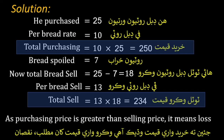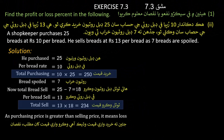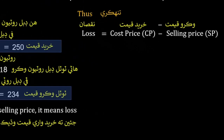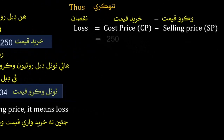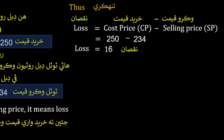Total purchasing cost is 250 rupees and total sale is 234 rupees. Since the cost price is greater than the selling price, it means there is a loss. Loss = cost price − selling price = 250 − 234 = 16 rupees.